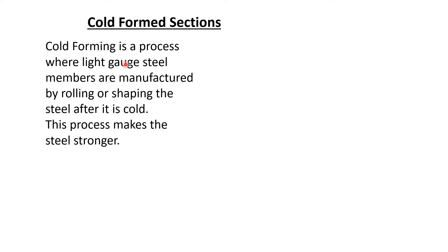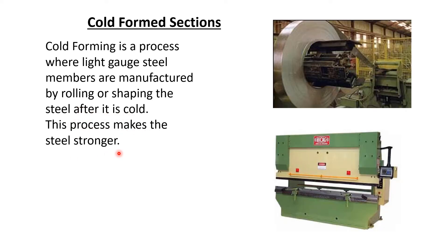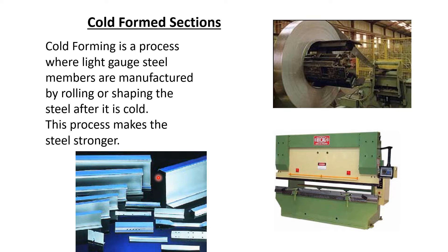Cold-formed sections are manufactured by a process where light-gauge steel members are formed by rolling or shaping steel after it is cold. This process makes the steel stronger. A roll of steel is passed into a hydraulic press brake machine and after pressing, different types of sections are made. These are not hot-rolled sections — cold-formed means the steel is at normal temperature when passed into the machine and new sections are formed. These are very light-gauge steel sections. One example you may have seen is the framework for doors, which is also made of cold-formed sections.